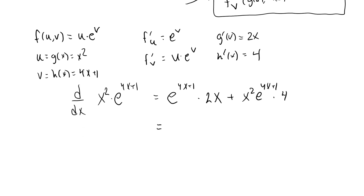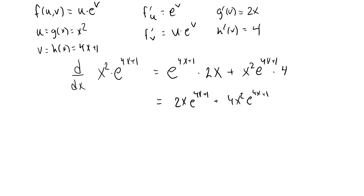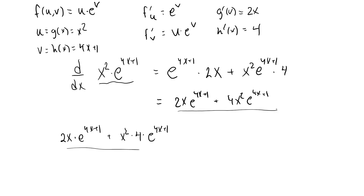Rephrasing this slightly, we get 2x·e to the 4x+1 plus 4x squared·e to the 4x+1. We can double-check that this is true by differentiating this function directly. By the product rule, this is the derivative of the x squared term — which is 2x — times e to the 4x+1, plus x squared times the derivative of e to the 4x+1, which is 4 times e to the 4x+1, and we can see that these are indeed the same.